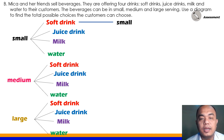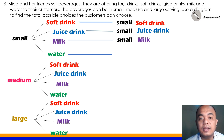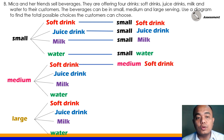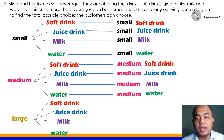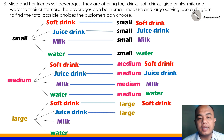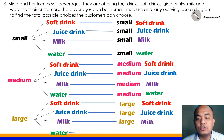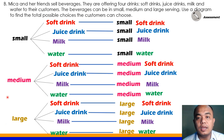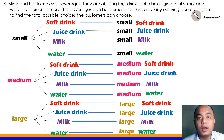The customers can choose small size soft drink, small size juice drink, small size milk, and small size water. They can also choose medium size soft drink, medium size juice drink, medium size milk, and water. Pwede rin naman silang pumili ng large size soft drink, large size juice drink, large size milk, and large size water. Counting all possible choices, we have 12. The customers can choose 12 possible choices of drinks they want to buy.